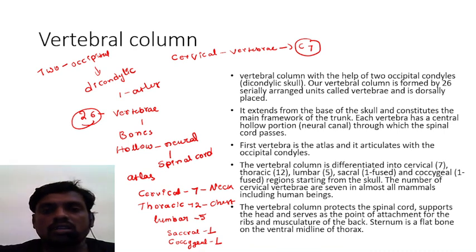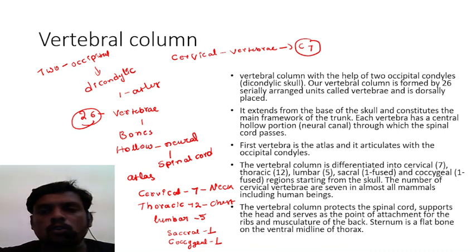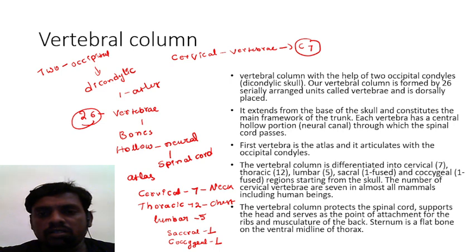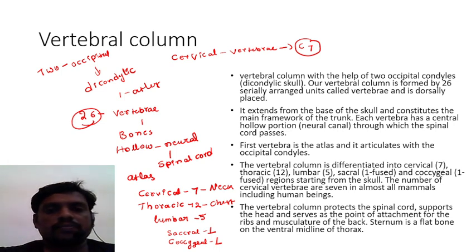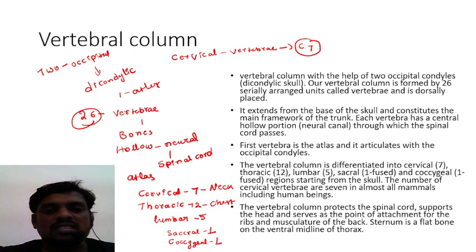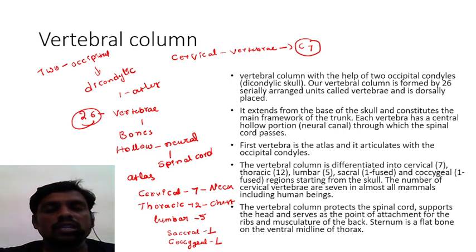The vertebral column protects the spinal cord, supports the head, and serves as the point for attachment of muscles. The sternum is a flat bone that is present on the ventral surface of the thorax, which we will learn about in the next class.